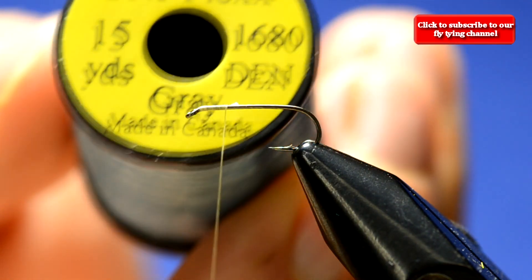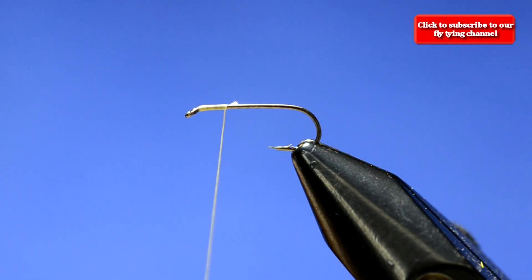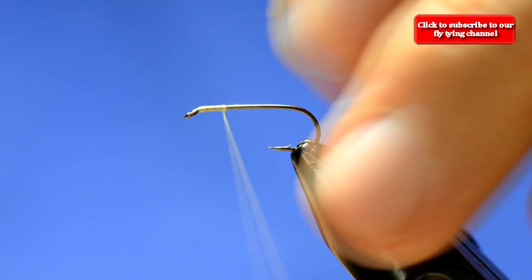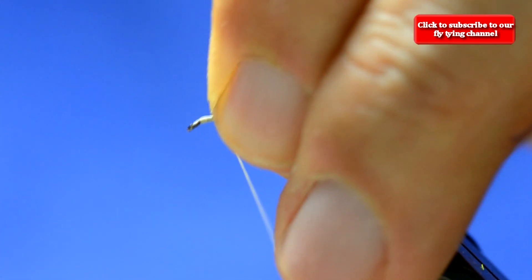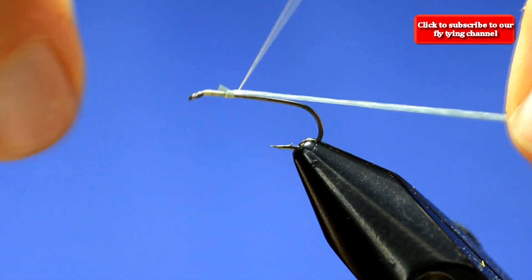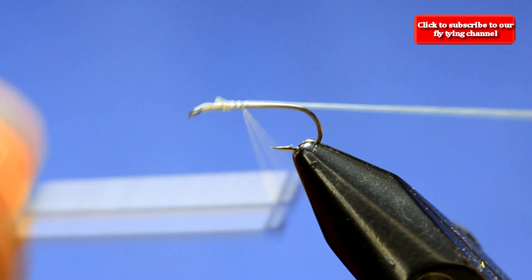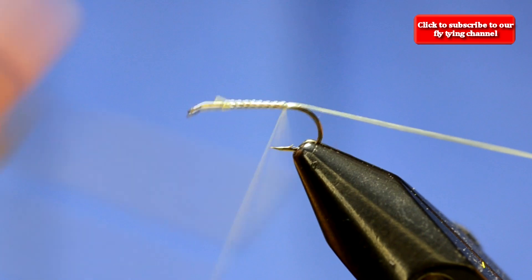Now for the ribbing I'm going to use some Uniflex. This stuff is great for ribbing and also bodies. We'll just tie this in right there. I'm just going to stretch that and go all the way to the back.